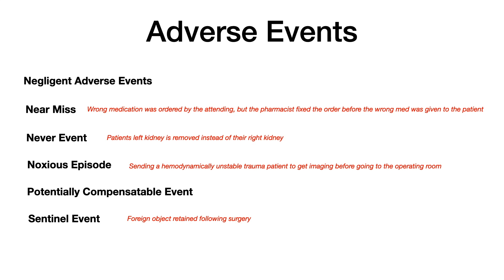A never event example: a patient's left kidney is removed instead of their right kidney. If someone is supposed to have their right kidney removed and their left kidney is removed instead, this is a never event because when you hear about this, you conclude it should absolutely never happen. There's a huge difference between a latent error where an EKG machine runs out of batteries versus this active never event where the wrong organ is taken out.